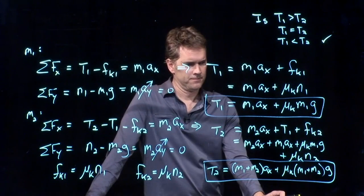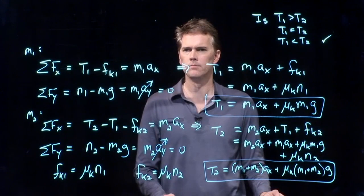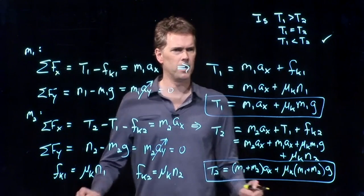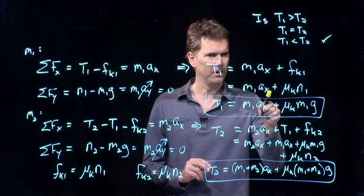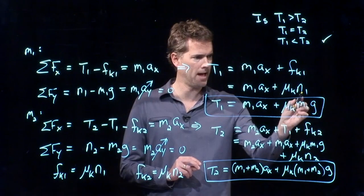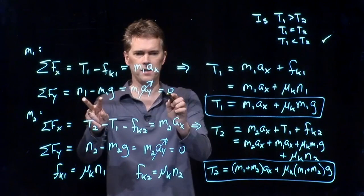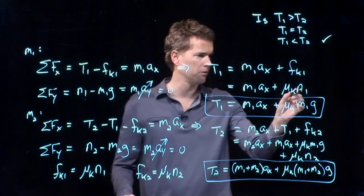Daniel? What happened to the N2? N2 became M2 G from this equation, and so it's right there, M2 G, and there's my mu K. Other questions about this one? Yeah, David over there? Where did I get the second part for tension one? That came from this one right here. The normal force on one was just, since this thing is equal to zero, we must have N1 equals M1 G. So I just plug that in right here, N1 equals M1 G.